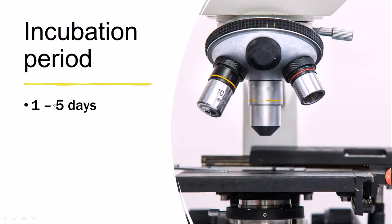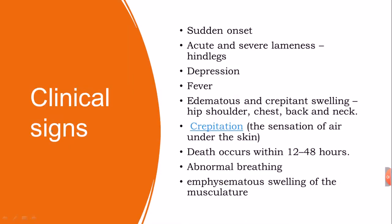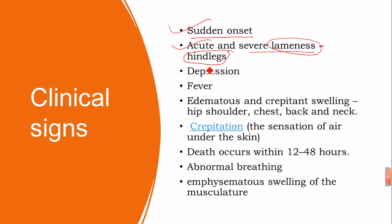The incubation period is 1 to 5 days. Regarding clinical signs: there is a sudden onset after spore ingestion or wound entry, with no gap before signs appear. Acute and severe lameness can occur — the animal cannot walk easily, specifically affecting the hind legs. Fever and anorexia are also common.